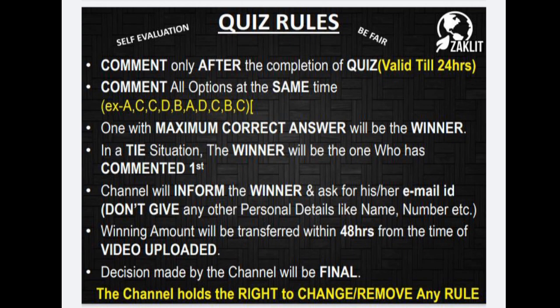Next, comment all the options at the same time. For example, if the answer for question number one is option A, write A. Then if the answer for question number two is option C, write C after A. Likewise, from question 1 to 10, write all the options and comment in the comment box. The one with the maximum correct answers will be the winner, but in case of a tie, the winner will be the one who commented first.